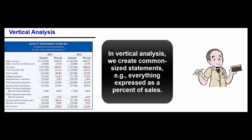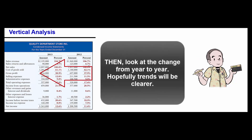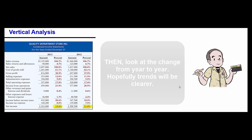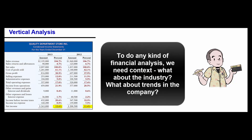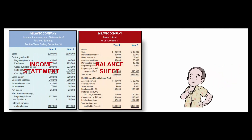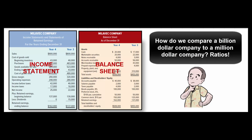Another technique is called vertical analysis: create common-sized financial statements. For the income statement, take everything and express it as a percent of sales, then do horizontal analysis across years. This company last year had net income of 11.4% of sales and now it's up to 12.6% of sales — looks like a good improvement, but again we need more context about the industry and the company's history.